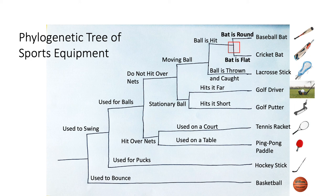The last divergence occurs because a baseball bat is round while a cricket bat is flat. These two OTUs — the baseball bat and the cricket bat — are the most closely related, which is why their branches are the shortest. These are the references for this video.